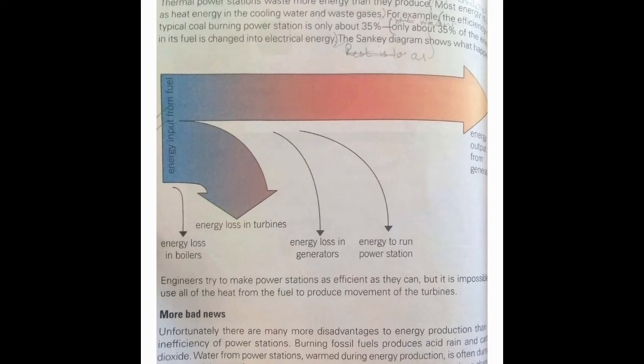This Sankey diagram shows the efficiency of a typical coal-burning power station, which is only about 35 percent. Only about 35% of the energy in the fuel is converted to electrical energy. There are also many more disadvantages to energy production beyond just inefficiency.